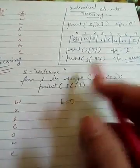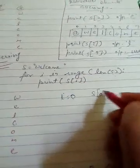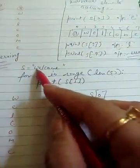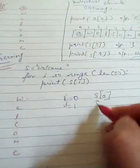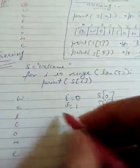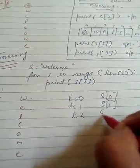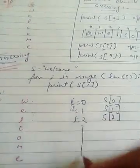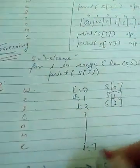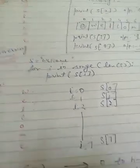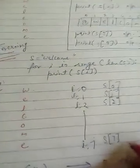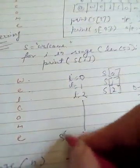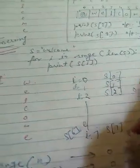So s[i] means the individual character — s[0] is 'w', which gets printed at the 0th position. Next, i is 1 so s[1] prints 'e', then i is 2 so s[2] prints 'l', and so on. When i reaches 7, s[7] would give an error because the valid indexing is 0 to 6. So s[6] prints 'e', completing the traversal of the string.